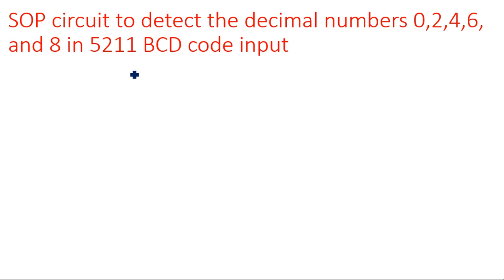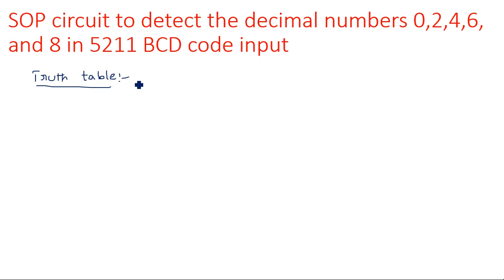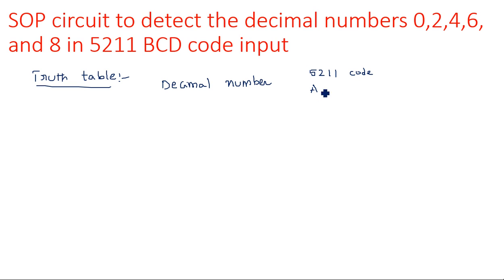The 5-2-1-1 code is taken as input, and when the input corresponds to 0, 2, 4, 6, or 8, the output will be 1; for the remaining inputs the output is 0. First we need to take the truth table, considering the 5-2-1-1 BCD code inputs A, B, C, D and the single output Y.